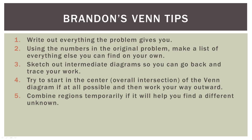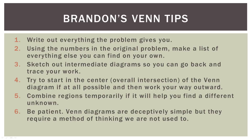Number five: combine regions temporarily if it will help you find a different unknown. That's the trick we used in the second problem — we used a part of A to find the part of B we were missing. Even though that combined region comprised two unknowns, we knew they had to add up to 3, and that allowed us to find the missing part of B. Number six: be patient. Venn diagrams are deceptively simple, but they require a method of thinking we really aren't used to — it's part puzzle, part chess game, part math problem. So work through it methodically.